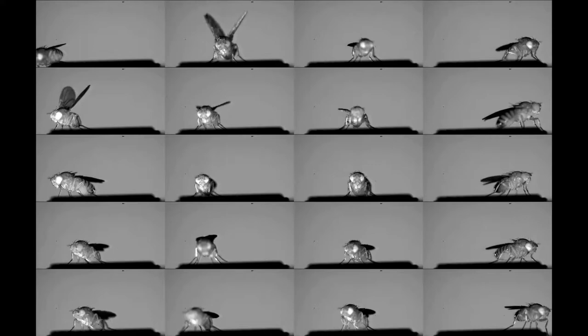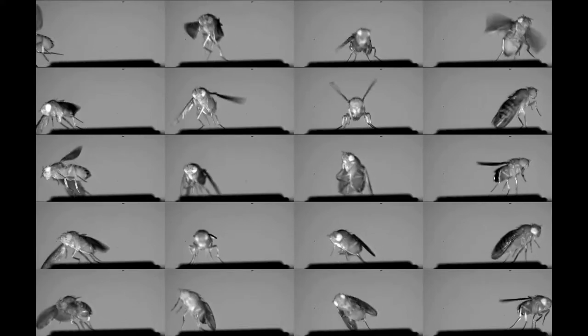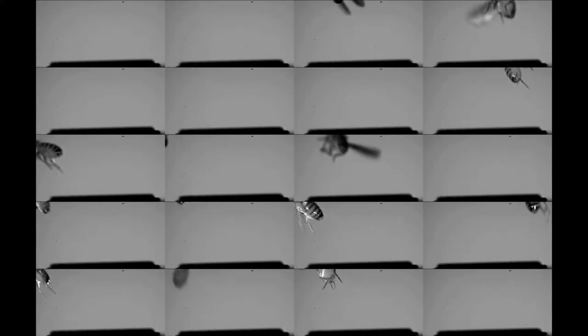A fly's long and short takeoffs both occur faster than the blink of an eye, but they're really quite different.